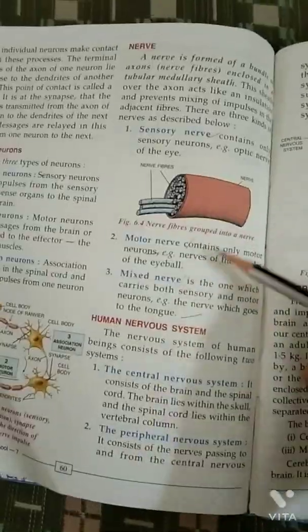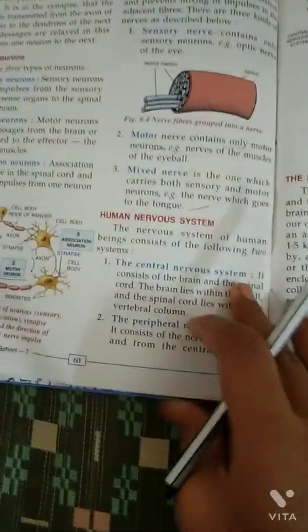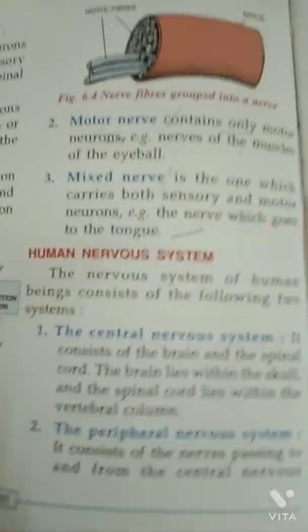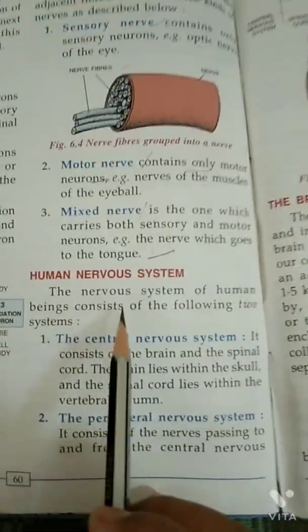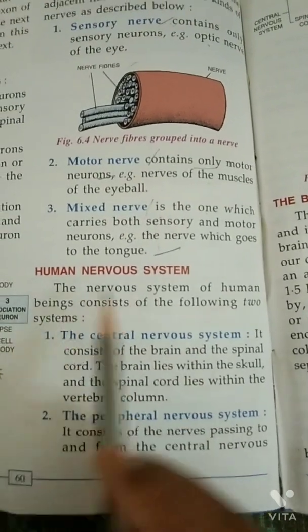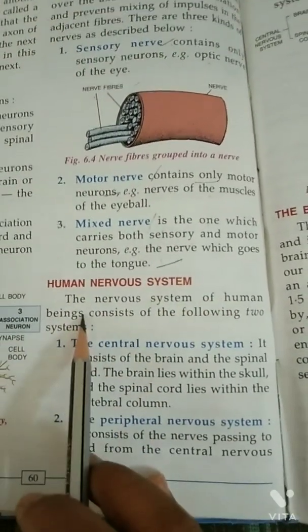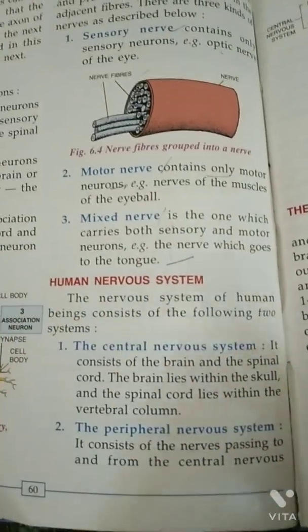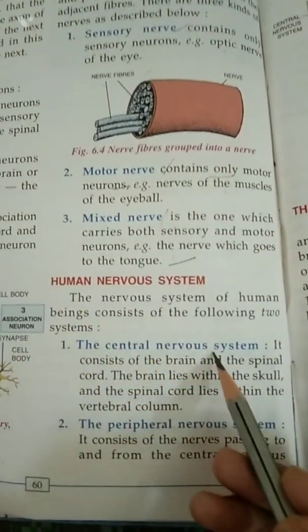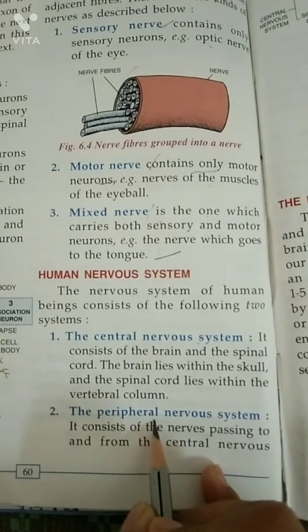Today we will start from the Human Nervous System. The nervous system of human beings consists of the following two systems. Human Nervous System is divided into two systems: Central Nervous System and Peripheral Nervous System.